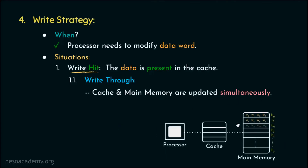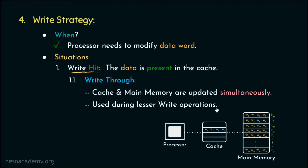For example, if the contents of main memory block number 1 are already in the cache and the processor modifies a data word, write through propagates that update to main memory immediately. This strategy is used during fewer write operations, because cache access is much faster than main memory access. Since write through updates both simultaneously, each write operation takes longer time.